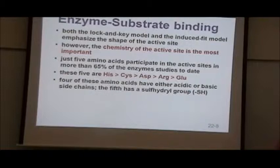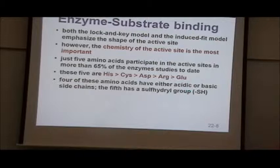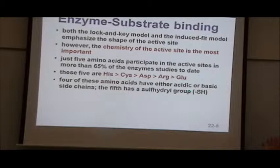Four of those five amino acids are either acidic or basic. From the proteins chapter: aspartic acid and glutamic acid are acidic, while histidine and arginine are basic. These are the amino acids that form positive and negative charges, which is why they are so special.